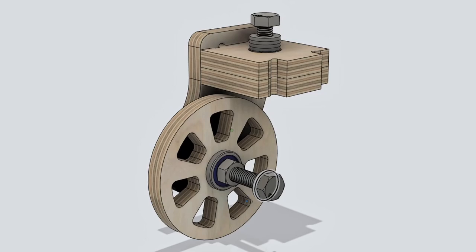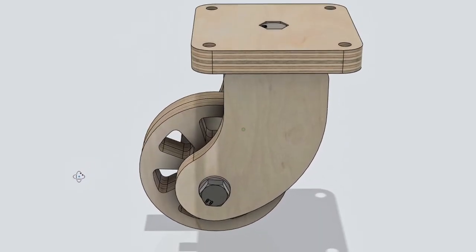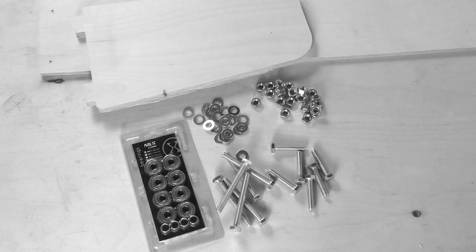So one evening I was messing around in Fusion 360 and came up with a simple caster wheel design. To make it all we would need is some M8 screws, nuts and washers, couple of bearings and a little bit of plywood.